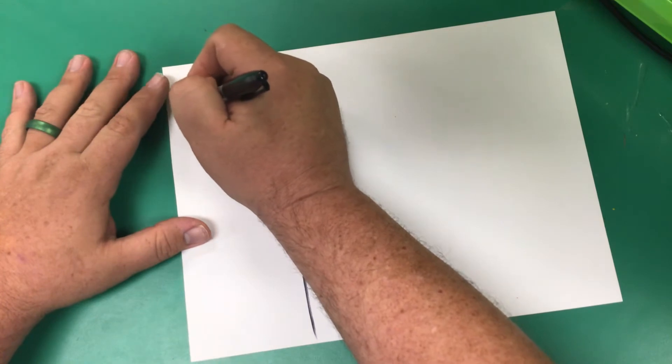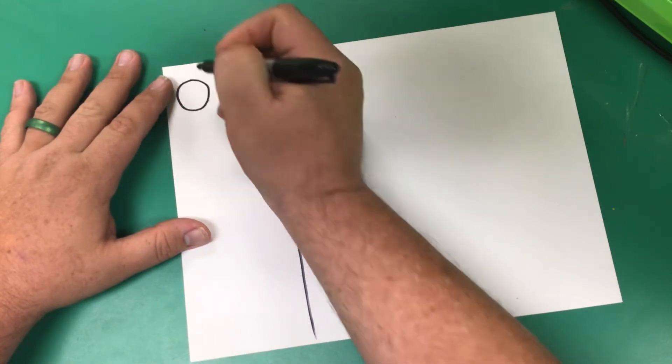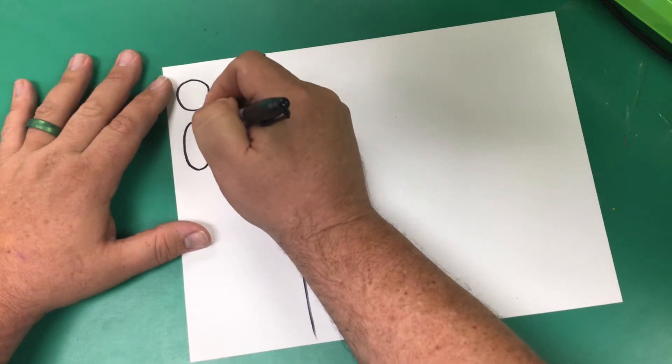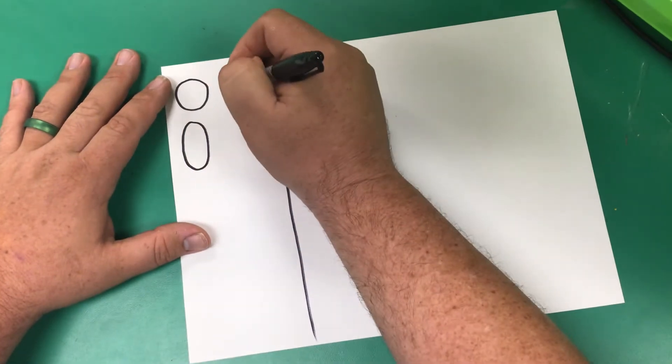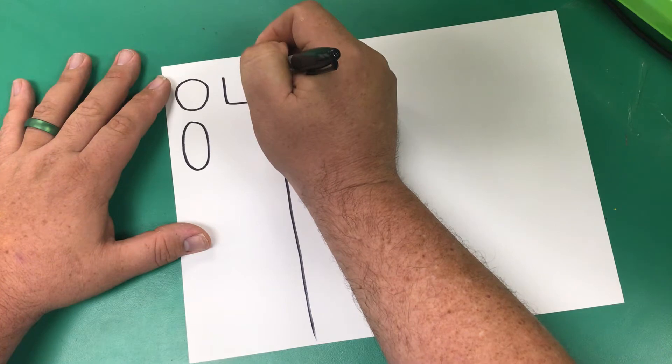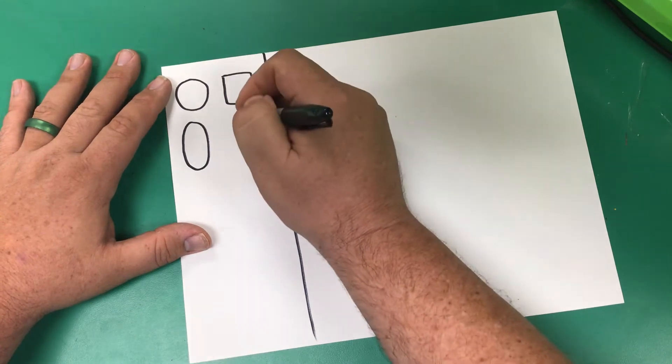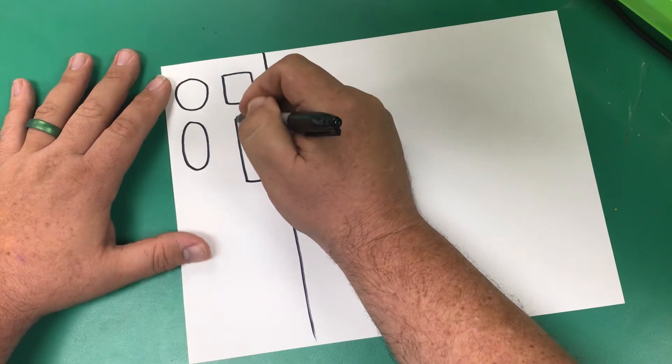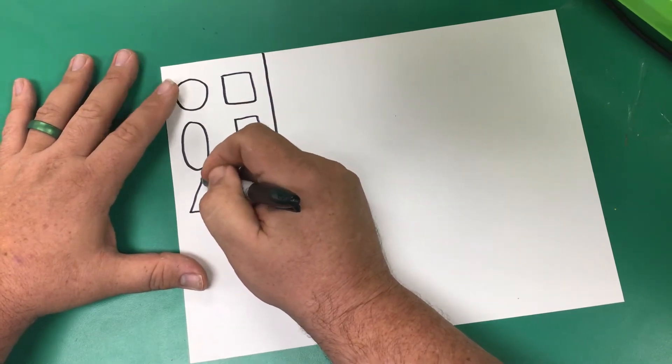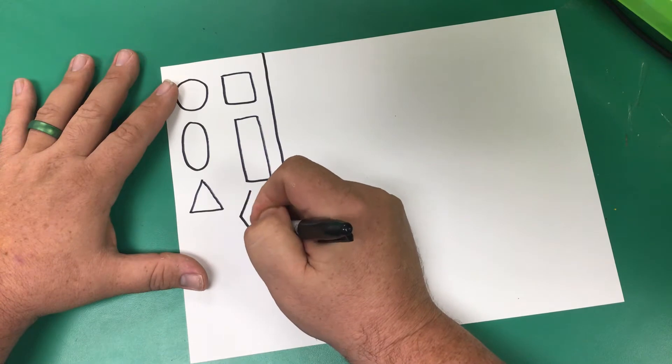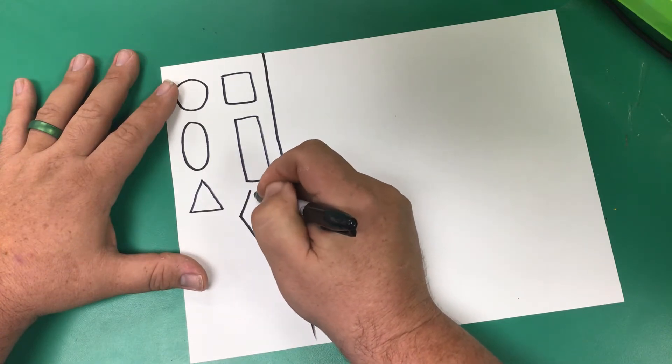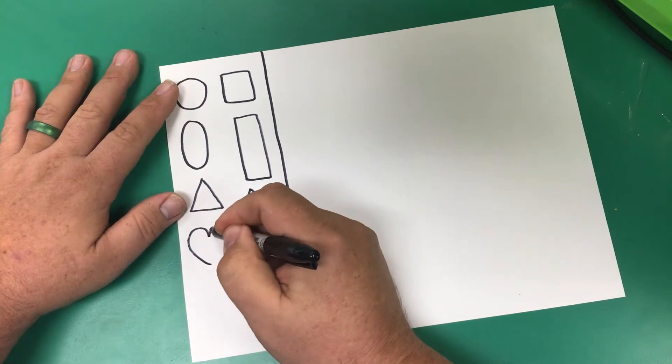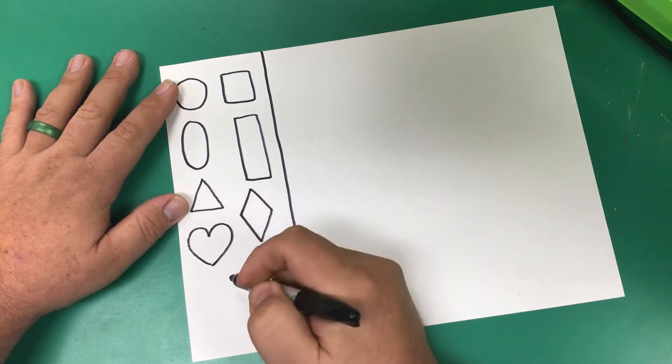Okay. So we think of circles, right? We think of ovals, we think of squares, and rectangles, triangles, and diamonds, hearts, stars.